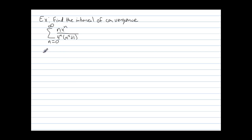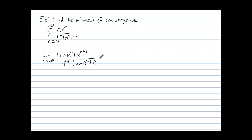So let's take the ratio test. We have the limit as n approaches infinity of the absolute value of the (n+1)th term: n plus 1 times x to the n plus 1, all over 4 to the n plus 1 times (n plus 1) squared plus 1. Normally we divide by the nth term, but since this is a fraction, we multiply by the reciprocal: 4 to the n times n squared plus 1 over n times x to the n.